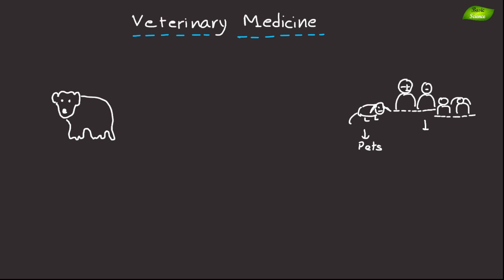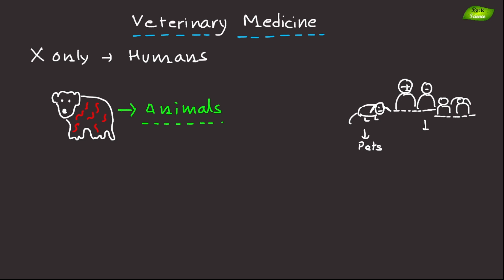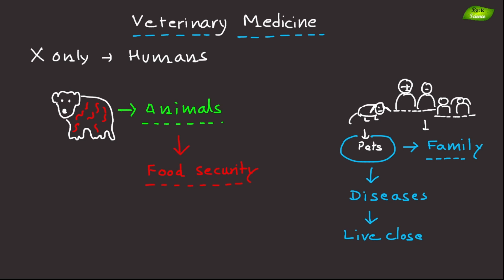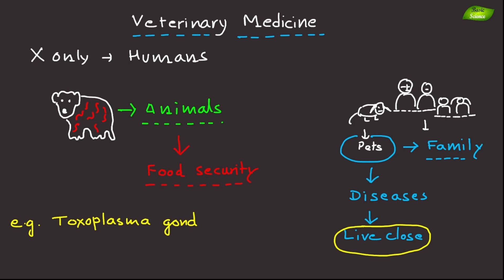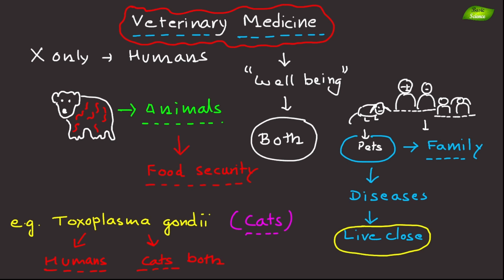The next scope of parasitology is veterinary medicine. Parasites not only target humans but also affect animals, impacting livestock and pets, which can have economic consequences and affect food security. Since pets are like family members, we need to understand diseases that affect animals in close association with humans. For example, Toxoplasma gondii, commonly found in cats, can pose serious health risks to both cats and humans.